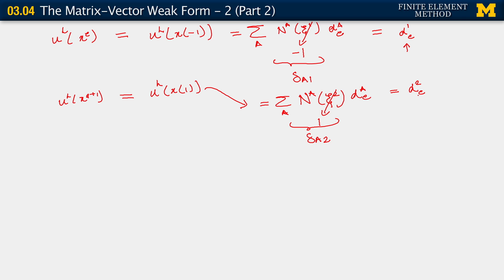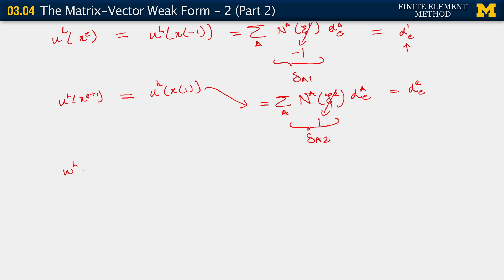Essentially the Kronecker delta property ensures that the trial solution evaluated at the corresponding node is indeed the degree of freedom value at the node. Stated differently, the nodal degrees of freedom are indeed the trial solutions themselves using these particular basis functions. And the same thing happens for w_h as well: w_h evaluated at x_e equals c_1^e, and w_h evaluated at x_{e+1} equals c_2^e.